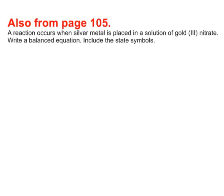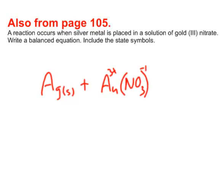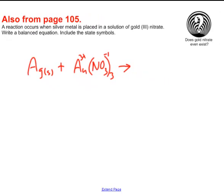A reaction occurs when silver metal is placed in the solution of gold three nitrate. Write a balanced equation. Silver metal, Ag, solid, combines with gold three nitrate. Gold is Au, and it's got three pluses, gold three. Nitrate is NO3, and it's a single negative. So it looks like I'm going to have to have three nitrates here to make that gold work. The metals will swap. This is another single replacement. So the silver will join with the nitrate, and the gold will come out as solid gold.